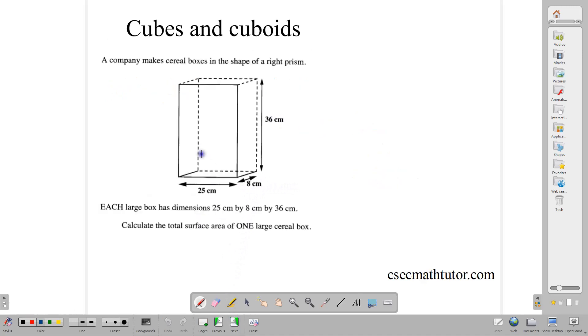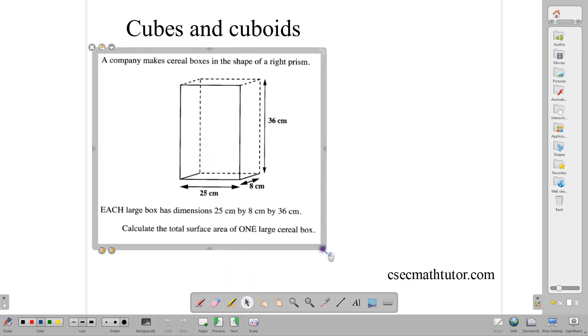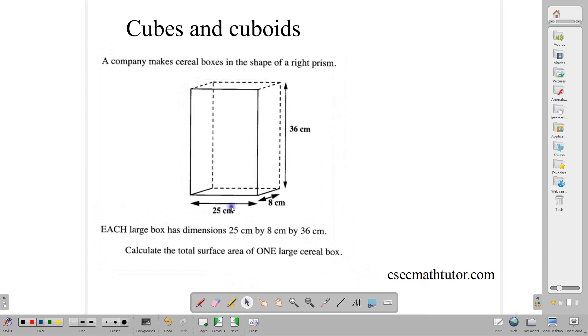In the case of the cuboid, this is a question from a past paper. Here we have, notice the rectangle at the front, it's still six sides, and the rectangle at the back, those are the same dimensions. And the rectangle here, at this side, is also the same as the rectangle at the side here. And notice that the rectangle at the base is also the rectangle at the top. So there are three pairs of sides.